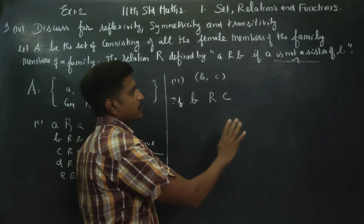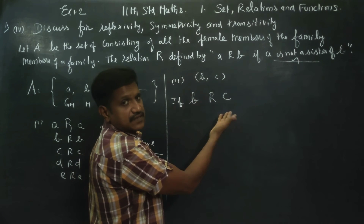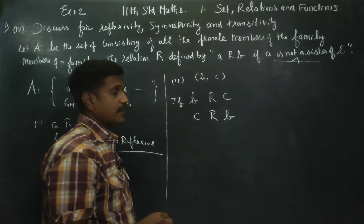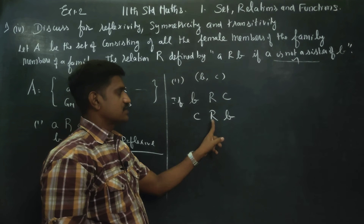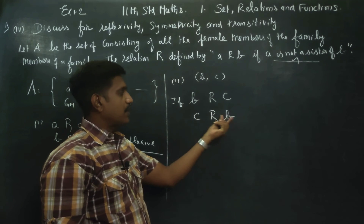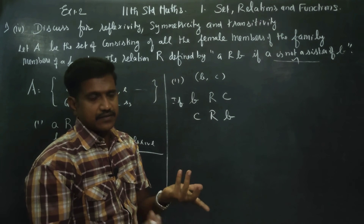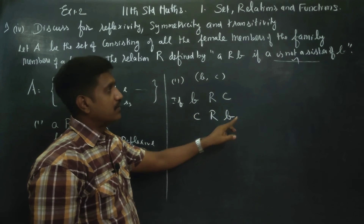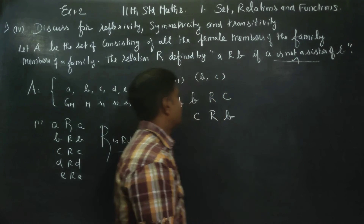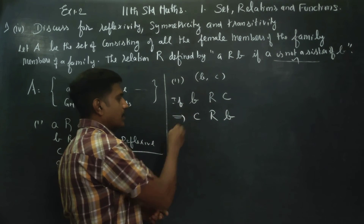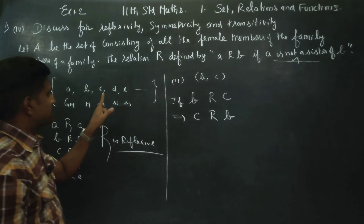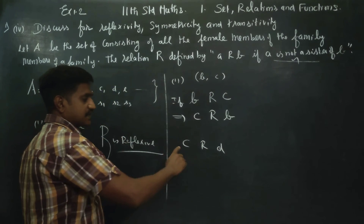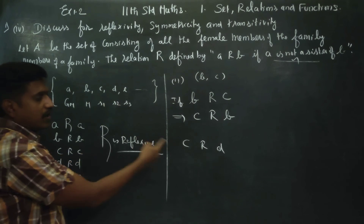In English, 'not a sister': B is the mother of C. If B is the mother, then C is not a sister of B. If you have a daughter, it is not a sister relationship — mother and daughter, not sister and sister.